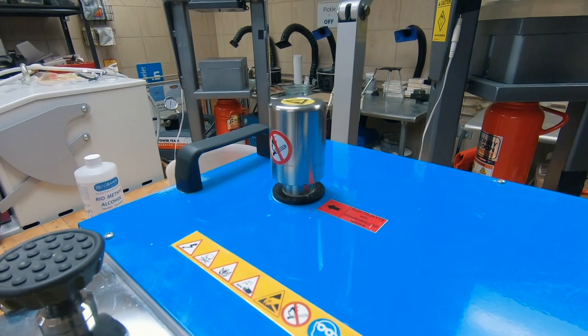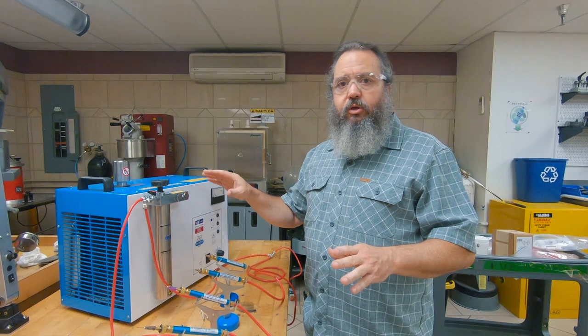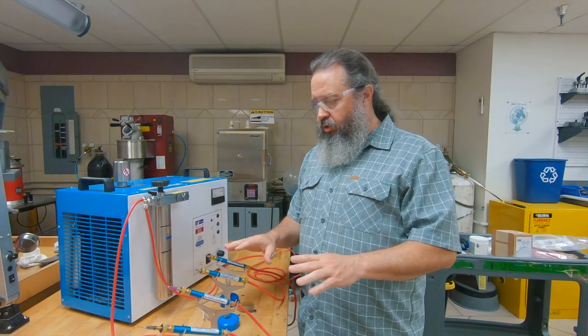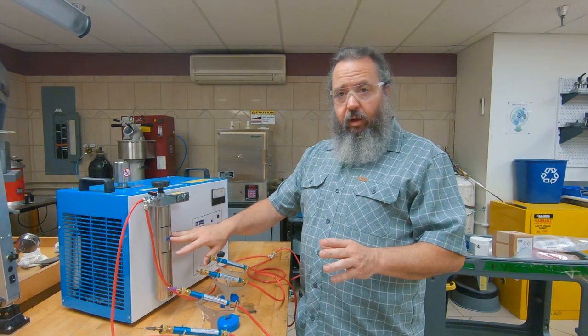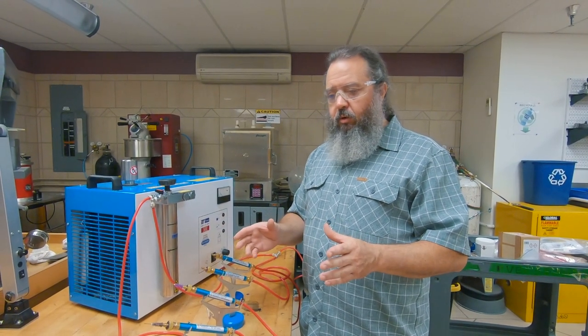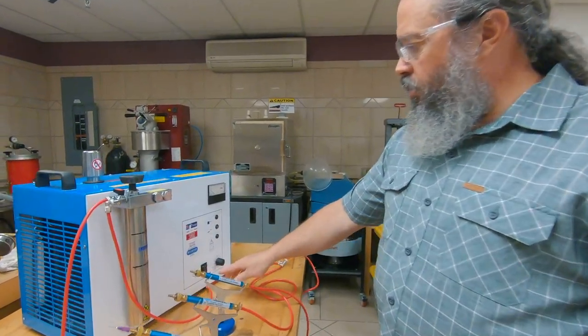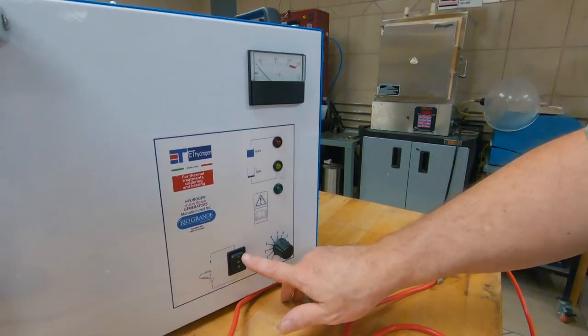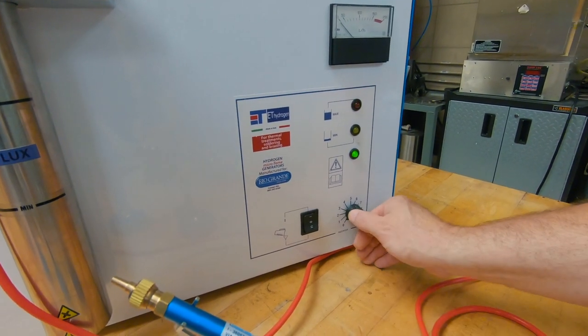And now you are ready to start the machine. Okay, so we've got the electrolyte solution in the machine. We've got our torches hooked up. We've got our flux tank hooked up. So now the only thing that we need to do is light our torches. So we're going to put the switch into the run position, which is straight up. You're going to hear the fan kick on.